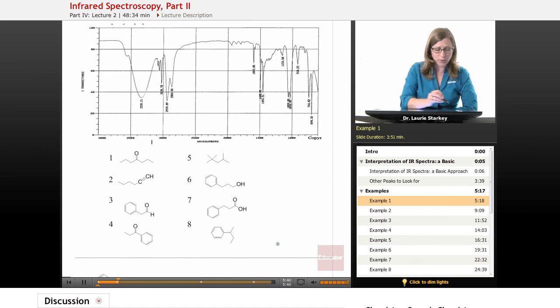Here's what we're going to do. We're going to read it from left to right just like we would a sentence, and we're going to start and look for our obvious peaks. We start and look around 3300, which is where we find an alcohol, an OH. Do we have an alcohol here? We sure do. This big broad peak around 3300 is exactly what an OH looks like.